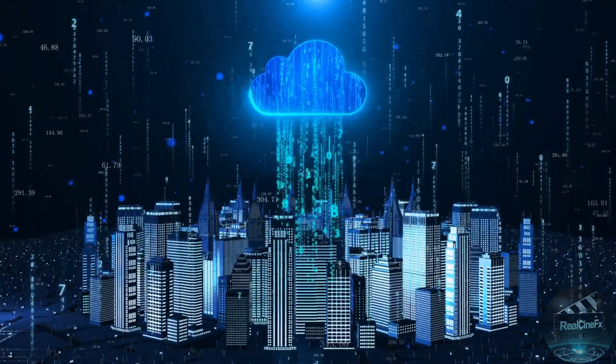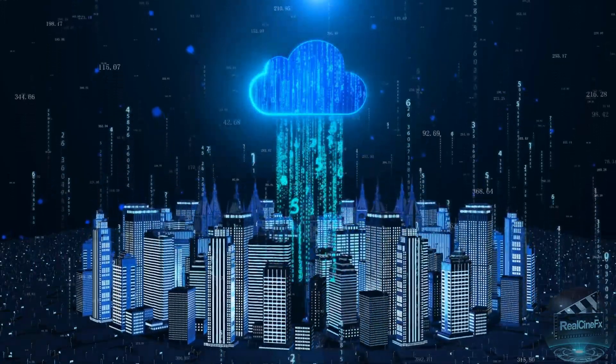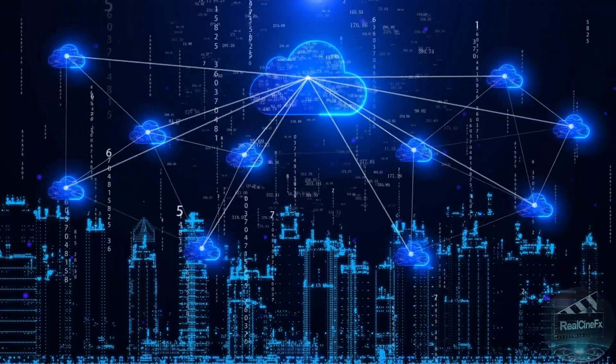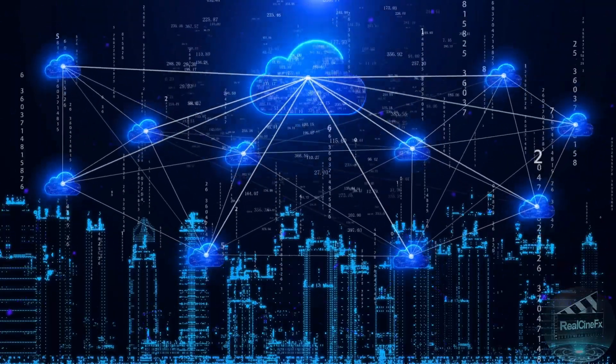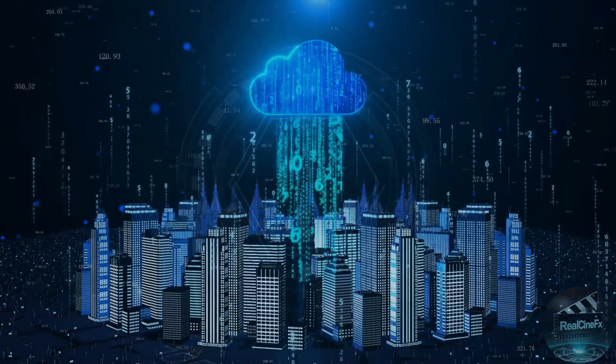They call this a quantum-level cloud backup. Imagine a super-powered cloud computer that uses quantum technology, kind of like a magic vault in the sky where your memories are safely stored. If anything ever happened to your robot body, or if the memories inside got scrambled, the cloud backup could restore everything perfectly.